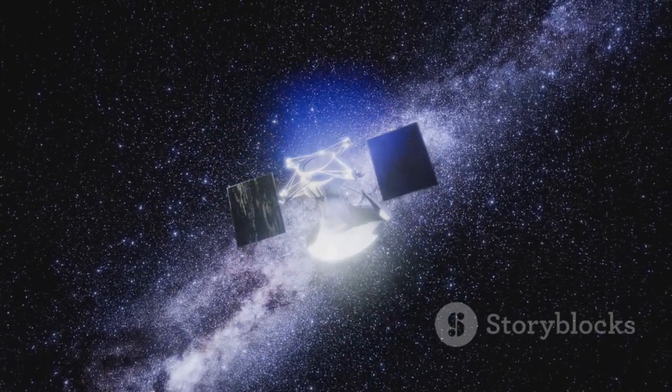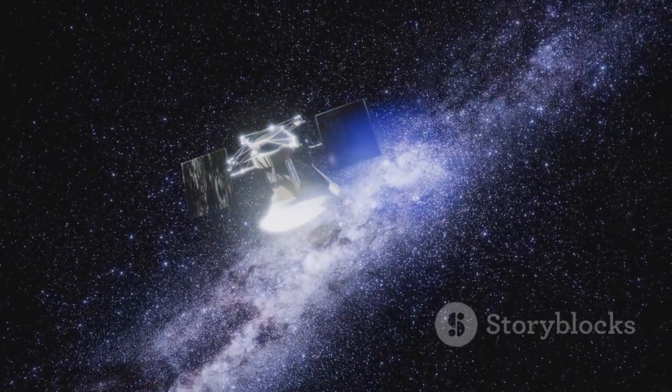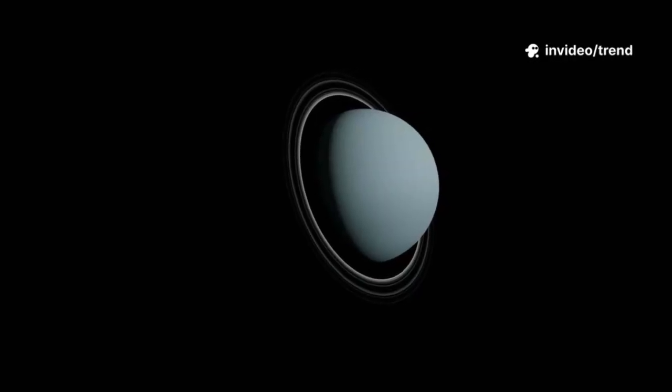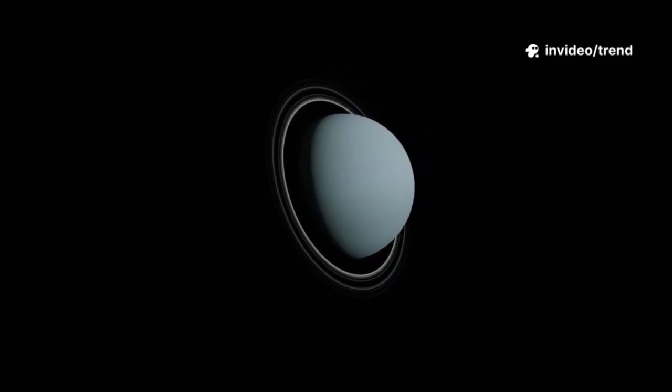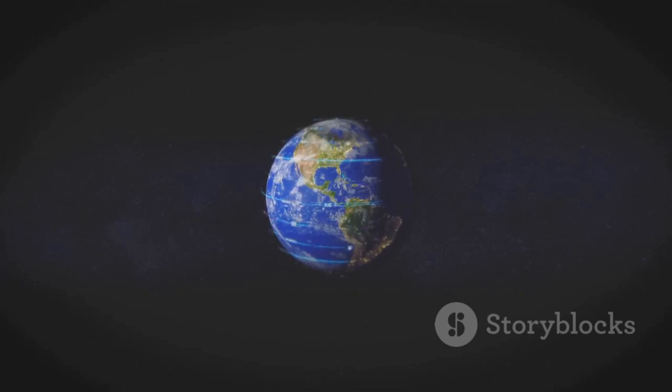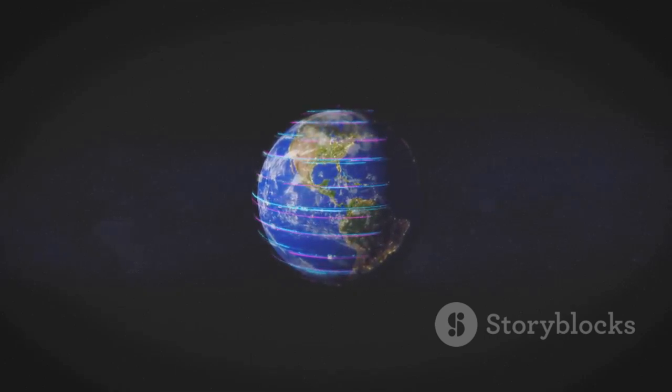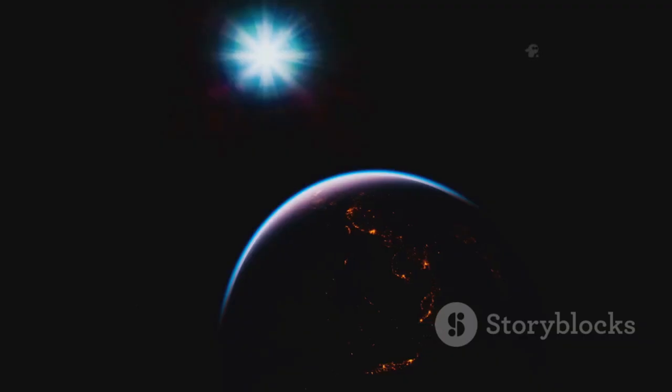Voyager 1's most important message wasn't about distant worlds - it was about us. In 1990, at Carl Sagan's request, Voyager turned its camera back and captured the Pale Blue Dot. From 4 billion miles away, Earth appeared as a tiny speck in a sunbeam, a fragile dot in the vastness.